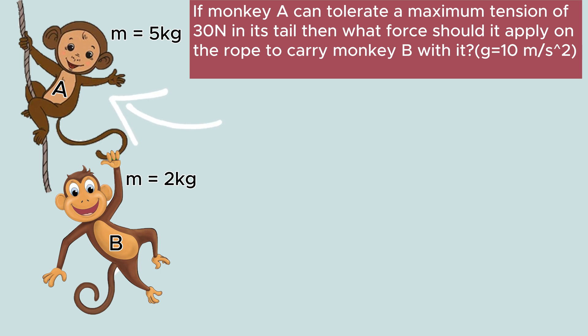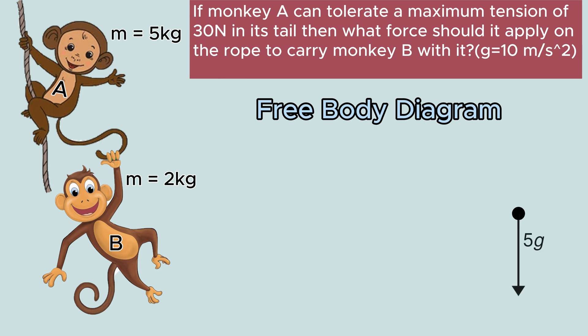Our next step will be to identify the forces that act on monkey A and draw a free body diagram. In the free body diagram, monkey A will be represented by a dot. We can clearly see that weight of the monkey will be acting downwards which equals 5g. In addition to the weight, the tension in the tail of monkey A due to B will also be acting downwards.